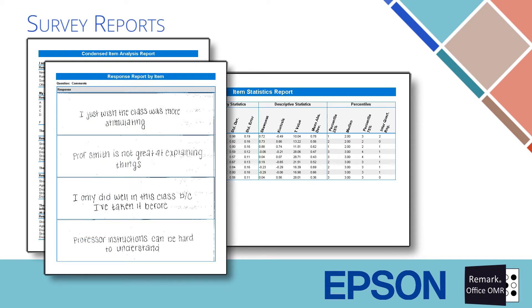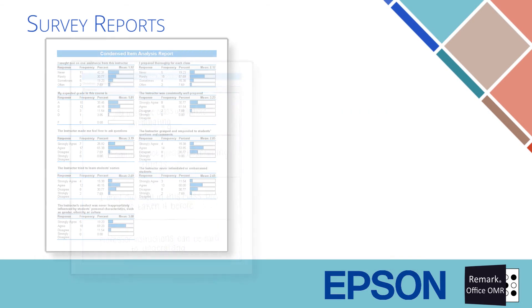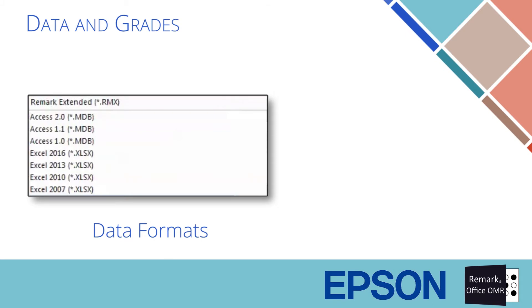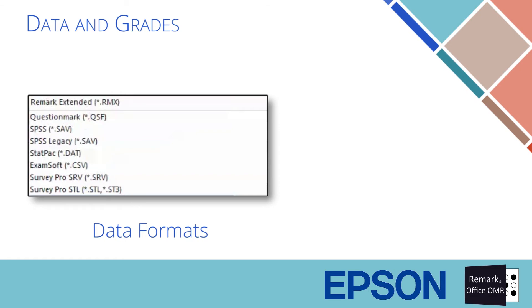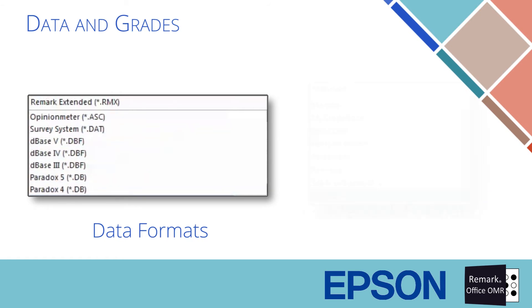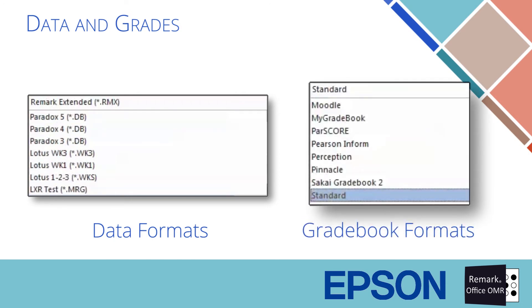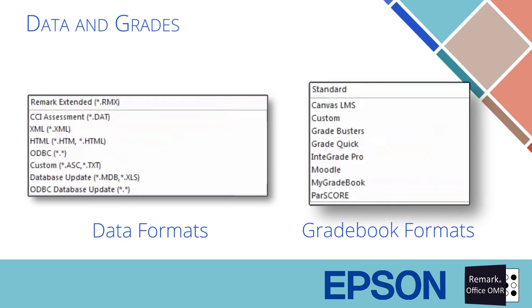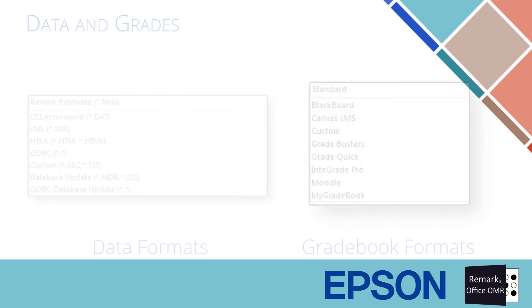All reports can be exported to PDF and other formats for easy sharing with others. The raw data and grades can be exported to a variety of formats, such as Excel, CSV, Access, and several others. You can also export the grades to several gradebook formats, including Canvas, Blackboard, and Moodle, as well as a standard CSV export if your specific gradebook format is not listed.